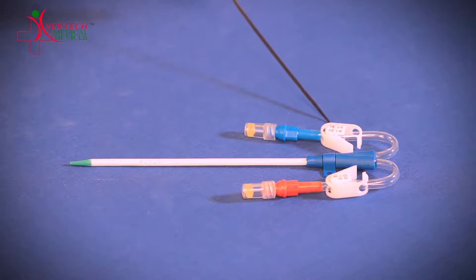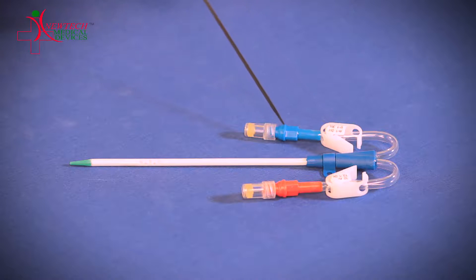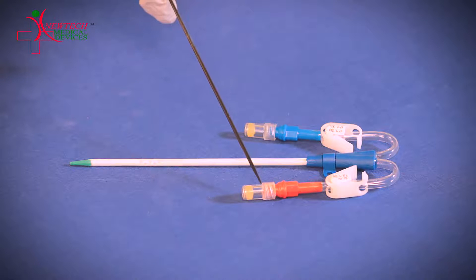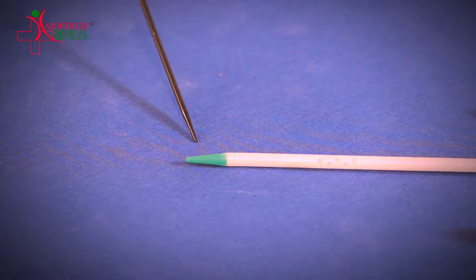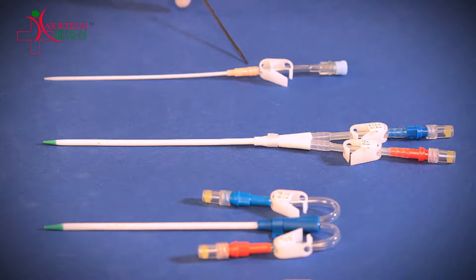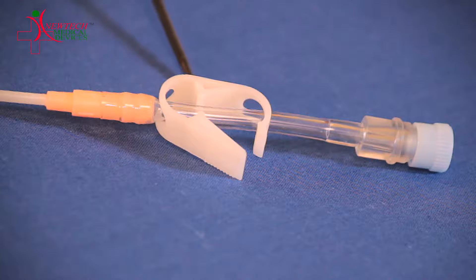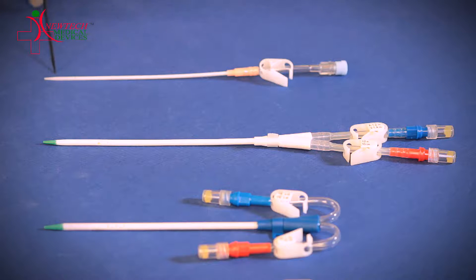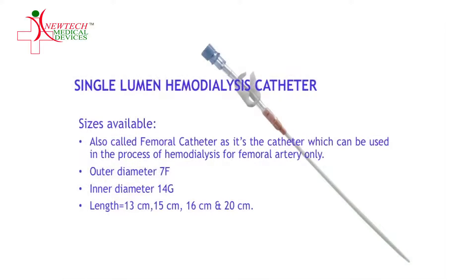This is a double lumen catheter. It is called double lumen because it has two ends: one distal end and one proximal end. Its tip is very soft. This catheter is available in various lengths and diameters. This is a single lumen femoral catheter. This is the blue cap to close the open end, and this is the pinching clamp. This catheter is available in different lengths: 13 cm, 15 cm, 16 cm, and 20 cm, with an outer diameter of 7 French.